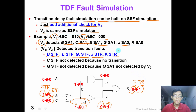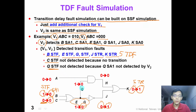In total, we can detect 5 transition delay faults in this pattern. Please note that C slow-to-fall fault cannot be detected because there was no falling transition. At the same time, Q slow-to-fall fault cannot be detected by this pair of test patterns because Q stuck-at-1 fault cannot be detected by vector 2.